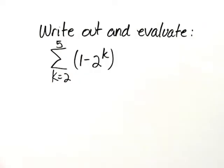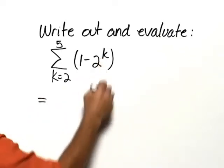Write out and evaluate the summation from k equals 2 to 5 of 1 minus 2 to the k. We begin this process by substituting in 2 for k.